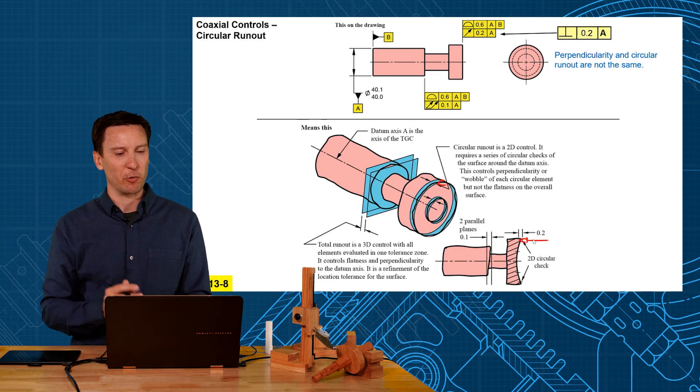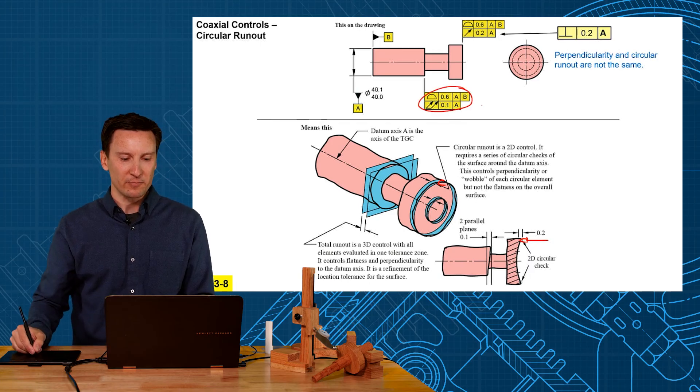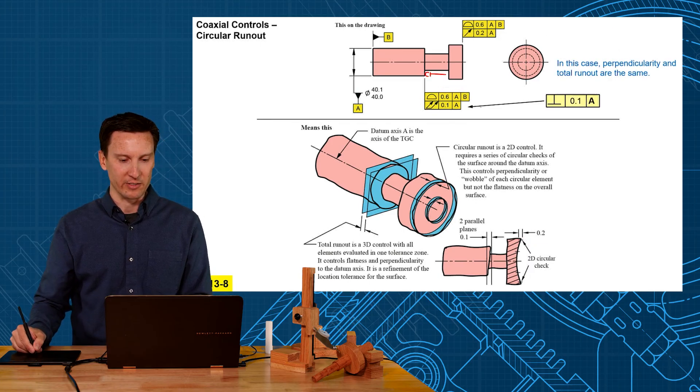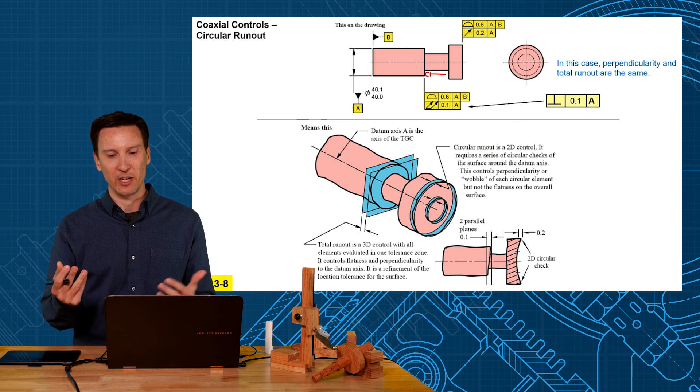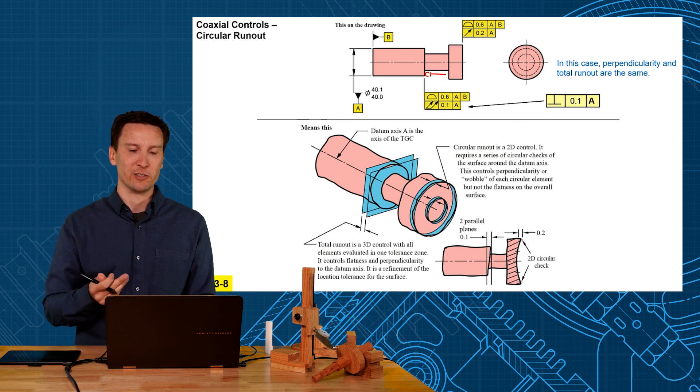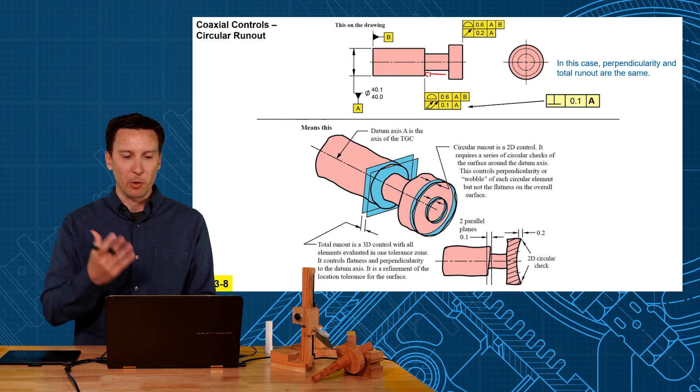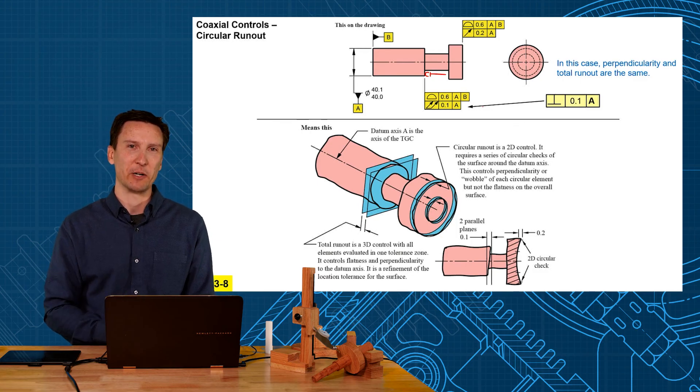I think this is pretty rare. For the first one here, total runout, I like using perpendicularity instead. I think that's much easier to understand. And circular runout, it has its uses, but I think that just a perpendicularity can be a much better way to control that too.